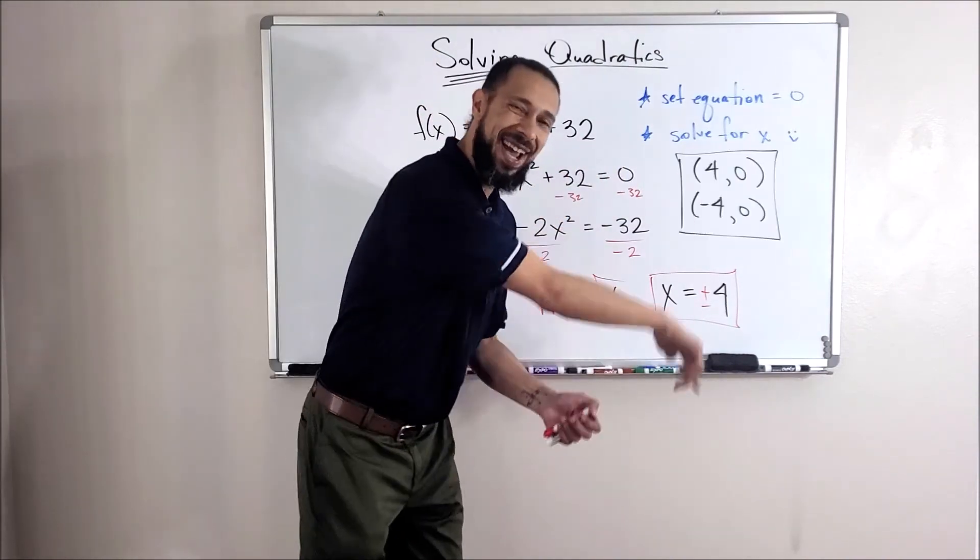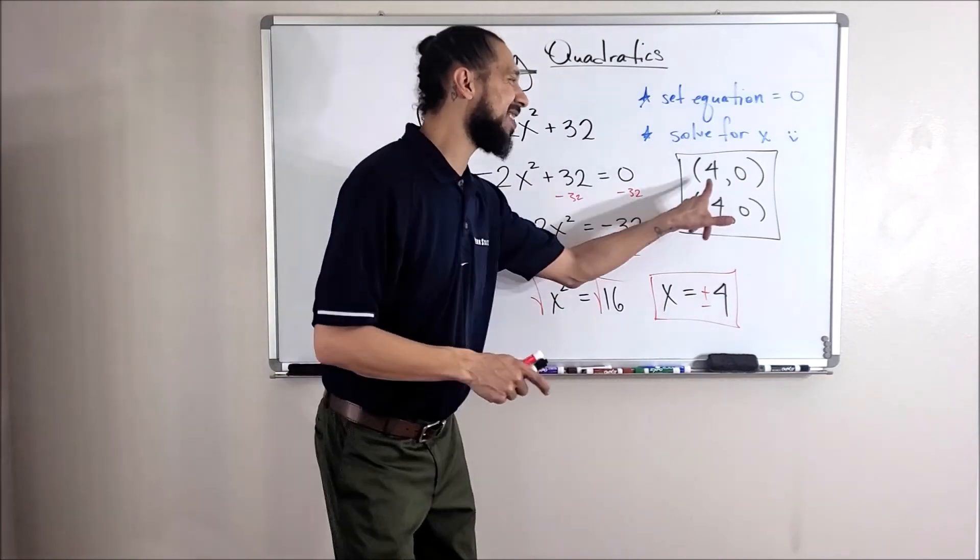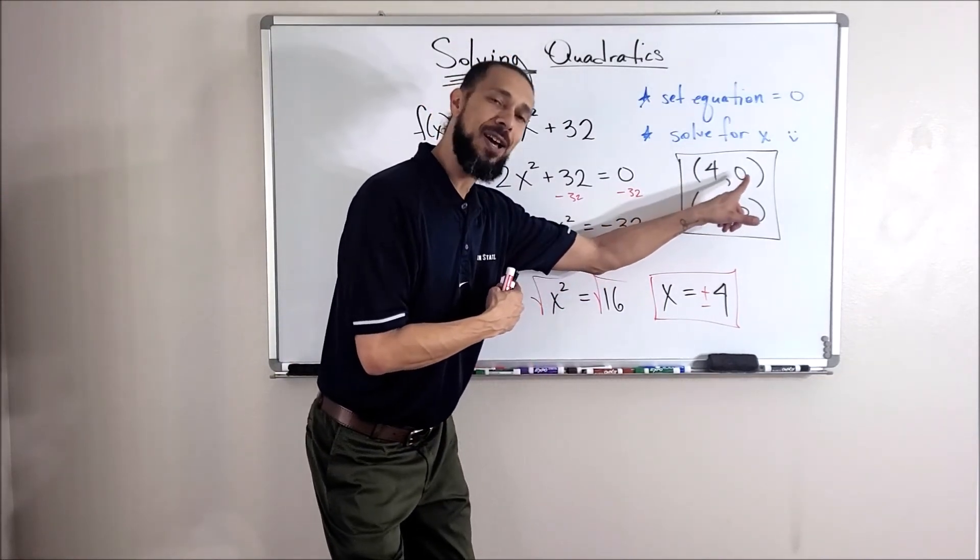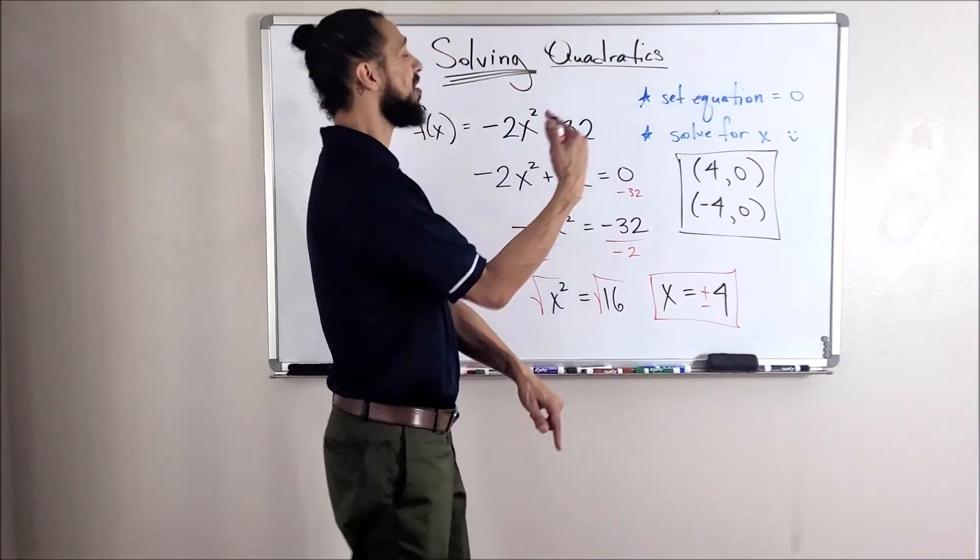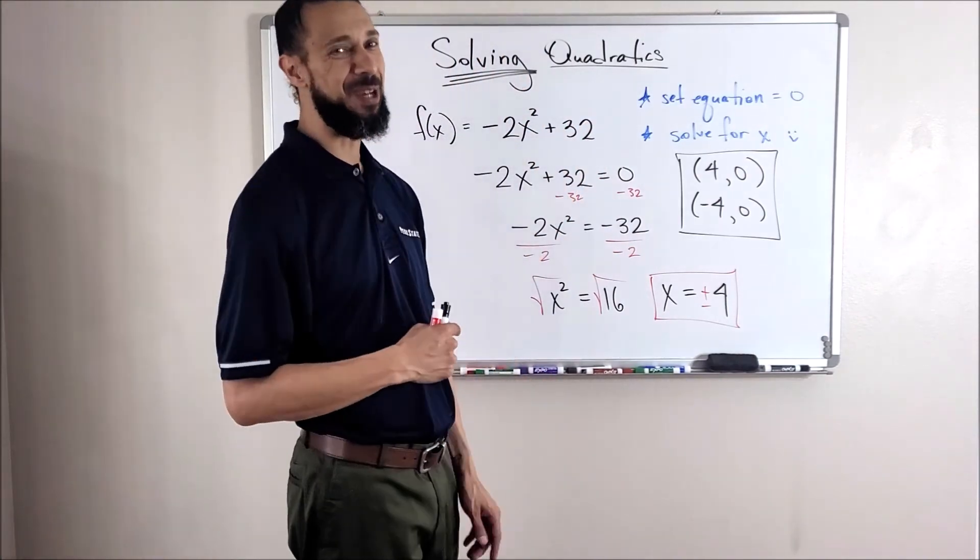And if I wanted to write down the coordinates of those intercepts, what would that look like? Like this. If this is the x-intercept where it crosses the x-axis, then the y-value is zero, just like we set our equation equal to.